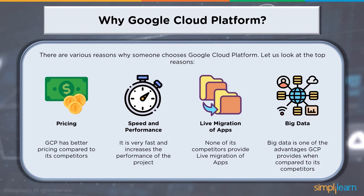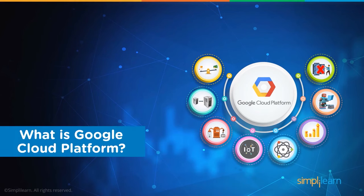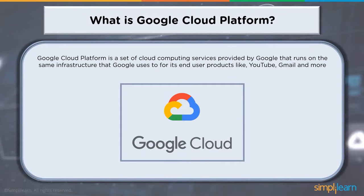When we talk about big data, AI, and machine learning solutions, GCP provides a lot of innovative solutions in comparison to other cloud providers such as AWS and Azure. Google Cloud Platform is a set of cloud computing services provided by Google that runs on the same infrastructure Google uses for its end-user products like YouTube and Gmail.